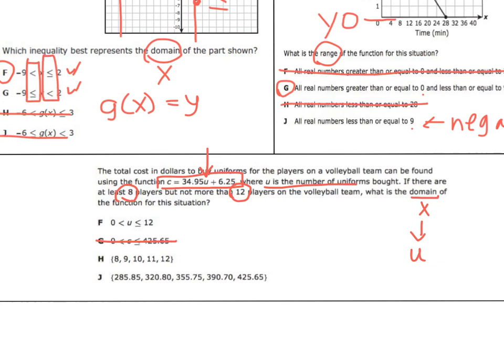We would go through and we would calculate. How many uniforms can we get? Because our u stands for uniforms. It says from 8 to 12. So that means at least 8 and not more than 12 players. Remember, players are whole numbers. So this has to be a discrete function, which would be letter H: 8, 9, 10, 11, and 12 are the only possible numbers of players that we can have.